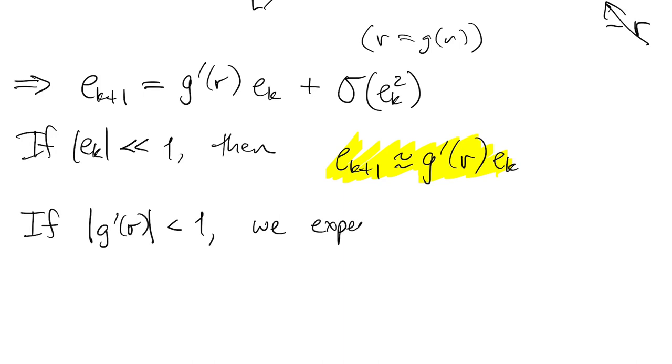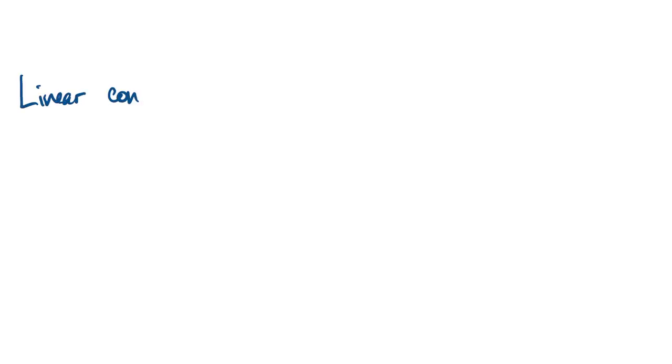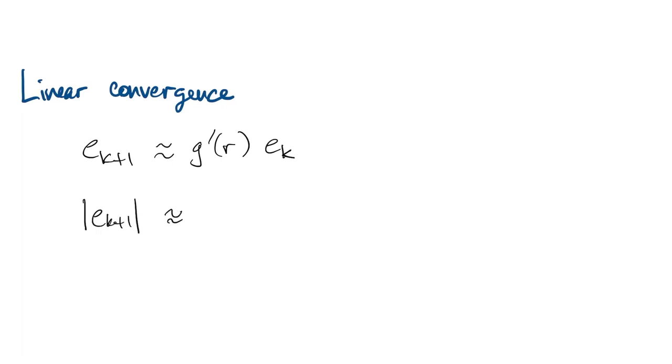Therefore, if this number g prime of r is less than one in magnitude, then the next error is going to be smaller than the current error. This is what we call linear convergence. Ek plus one is approximately a constant times ek, where that constant is less than one in magnitude. We'll call that number sigma.